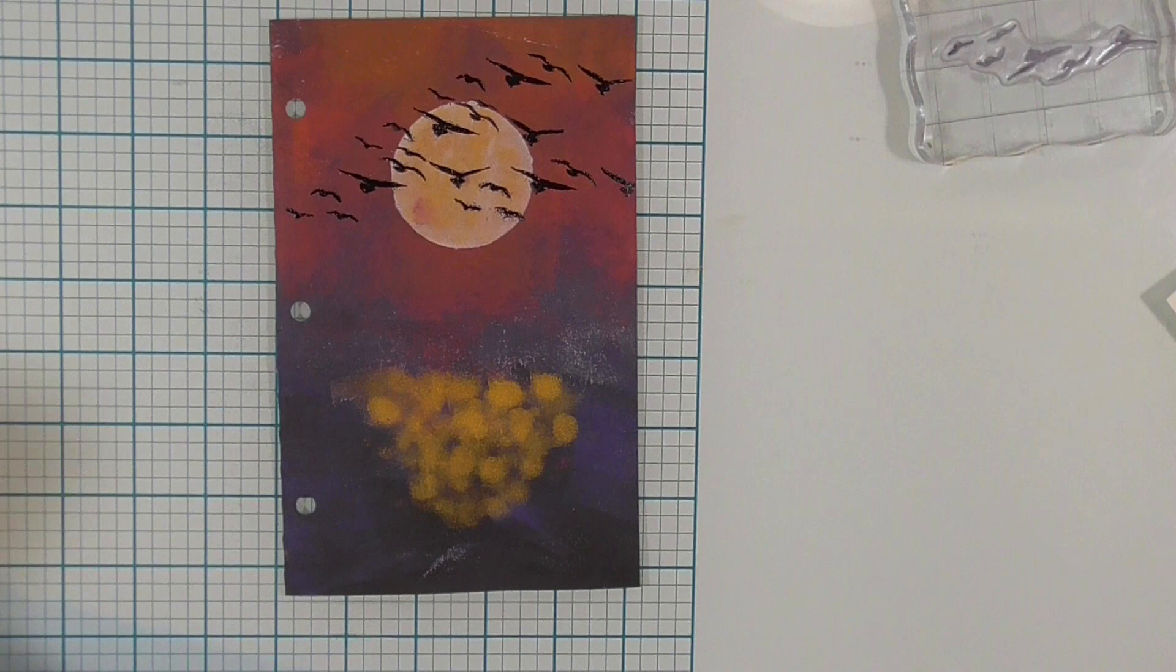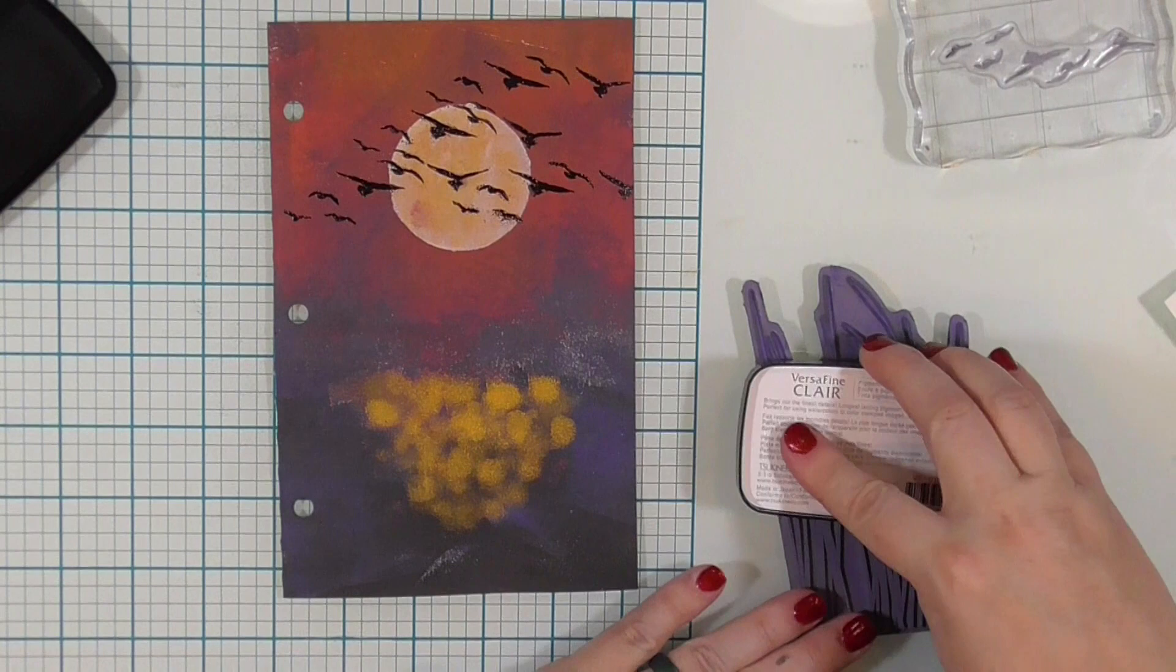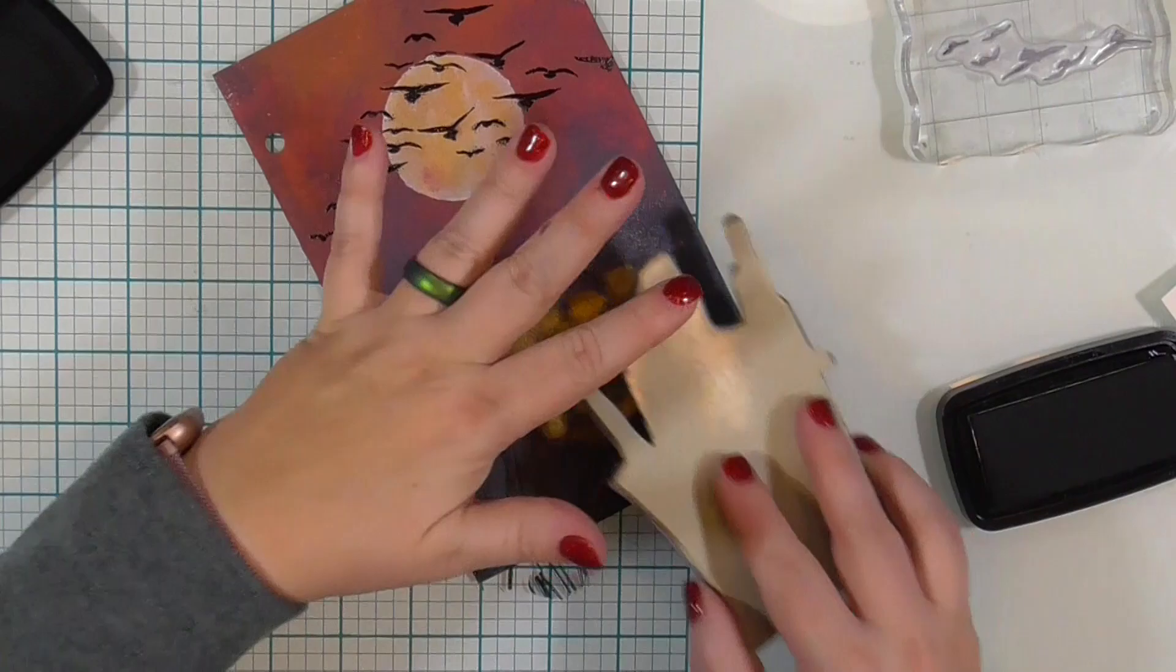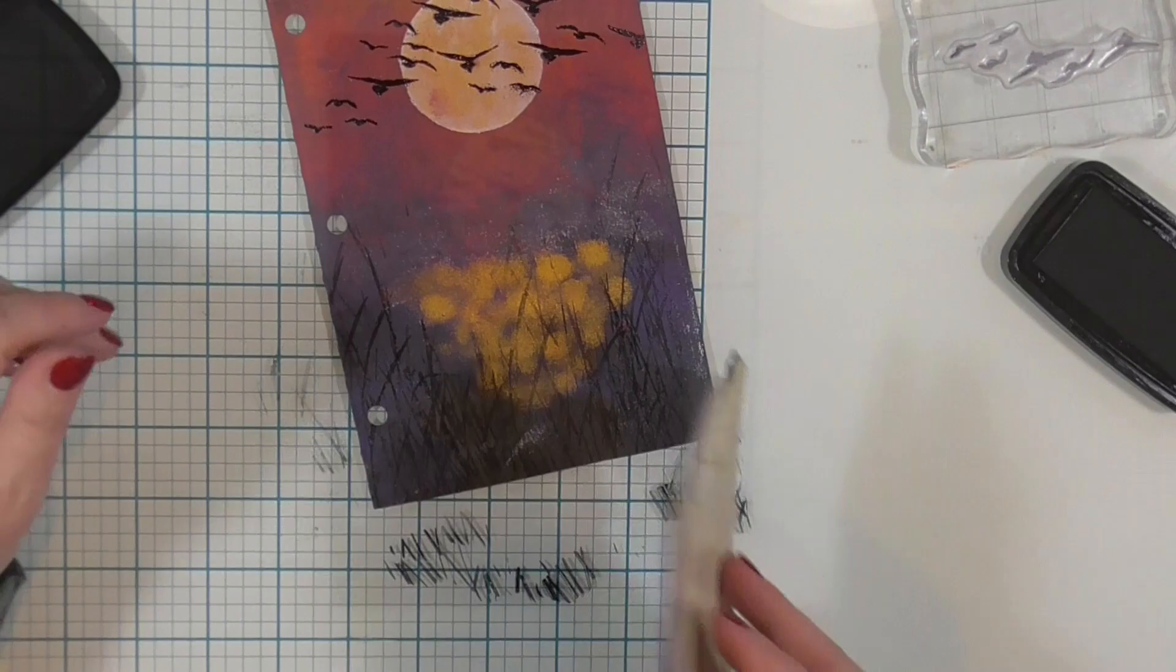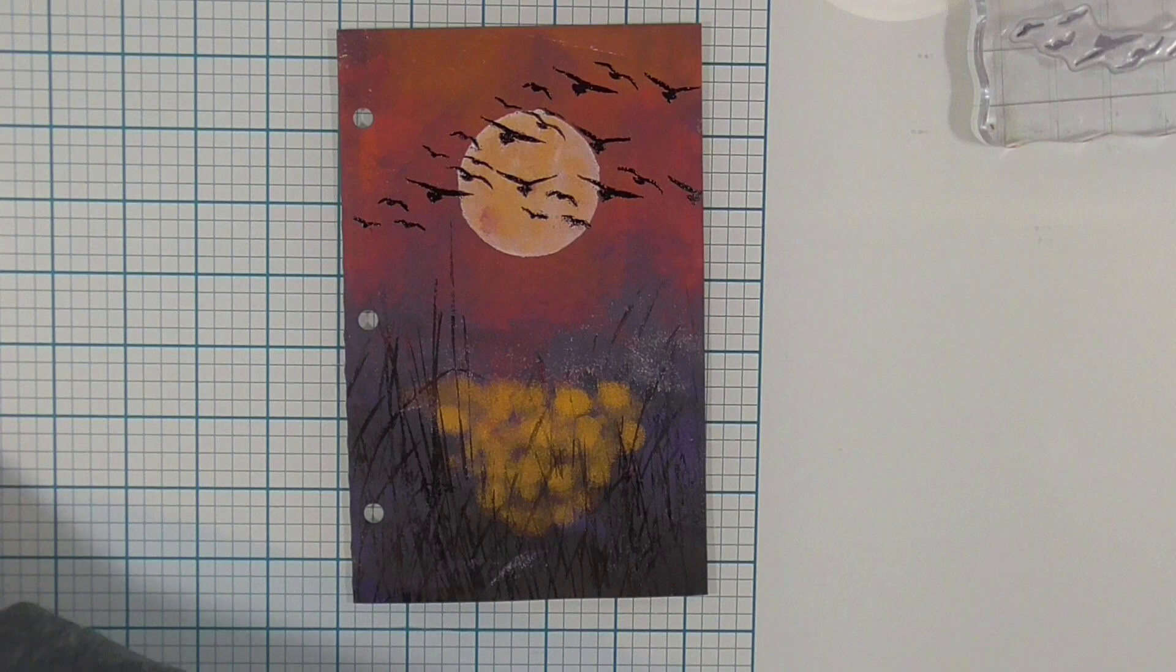So I have another very old Stampin' Up set, and this is some tall grass. And I am going to ink this up with black ink. I am not going to put on a stamp block because that is not chaos. That is control. And I am not going to ink up the whole stamp. I am going to ink it a little bit and stamp and ink and stamp and stamp and ink. And sometimes I will stamp it twice before I re-ink it. And I will make sure that those grasses look like total and utter chaos.